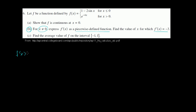So f prime of x equals: for x less than 0, we take the derivative of the first case. The derivative of 1 is just 0. The derivative of negative 2 sine of x — since the derivative of sine of x is cosine of x — gives us negative 2 cosine of x. So it's negative 2 cosine of x for x less than 0.